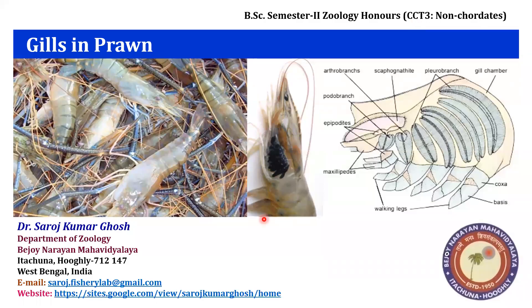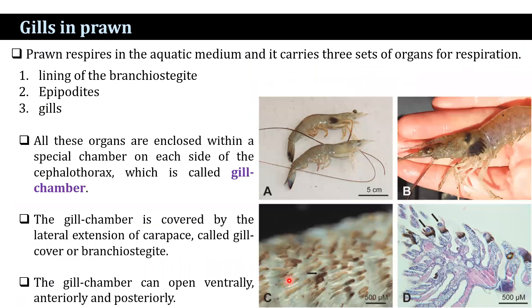Good morning, my dear students. Today I shall discuss the topic of gills in prawn. Prawn is dispersed in the aquatic medium and it carries three sets of organs for the purpose: the lining of the branchostegites, epipodites, and the gills. All these three organs are enclosed within a special chamber within the cephalothorax, known as the gill chamber.